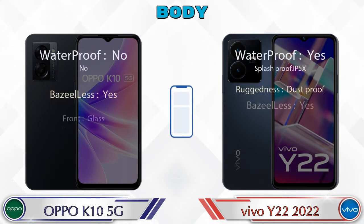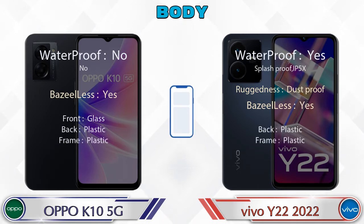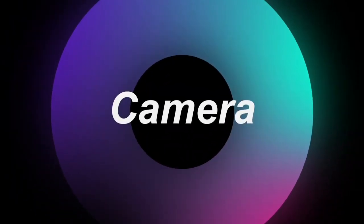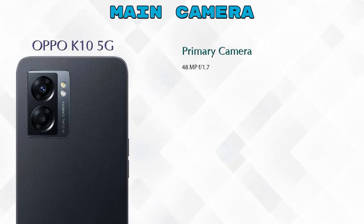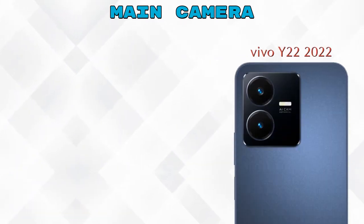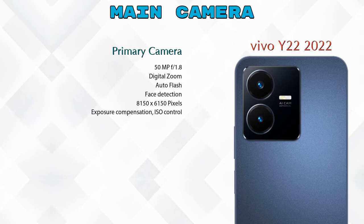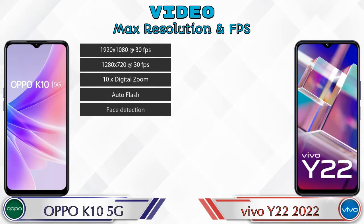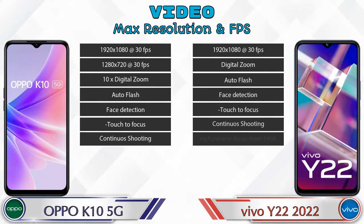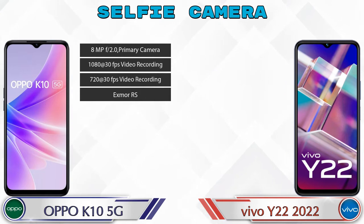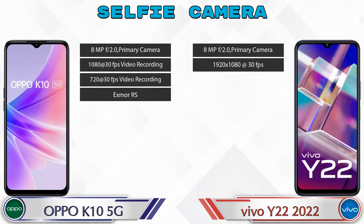Now let's see the detail about our favorite feature — cameras. For the rear camera, the K10 5G has two cameras: a primary camera and a depth camera. The Y22 also has two cameras: a primary camera and a macro camera. Both phones support seven different video recording features. For the front selfie camera, the K10 5G has a single camera with four features, and the Y22 has a single camera with two features.